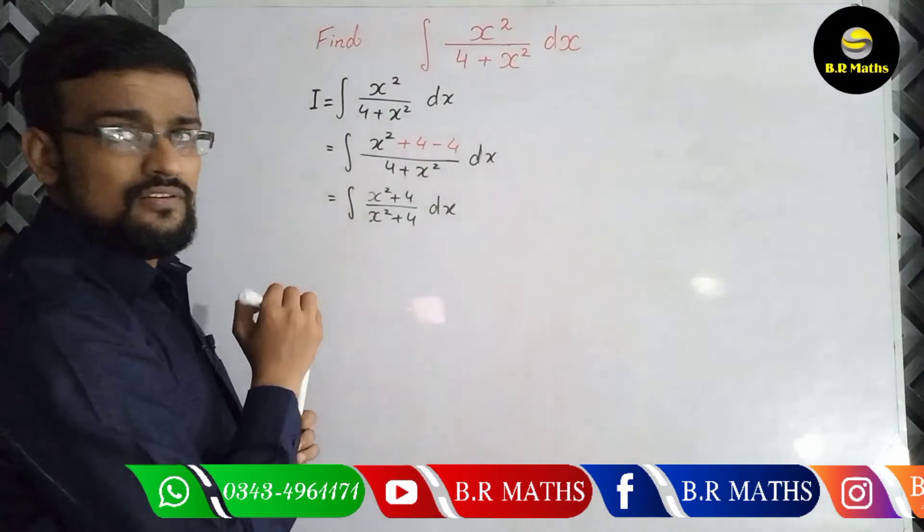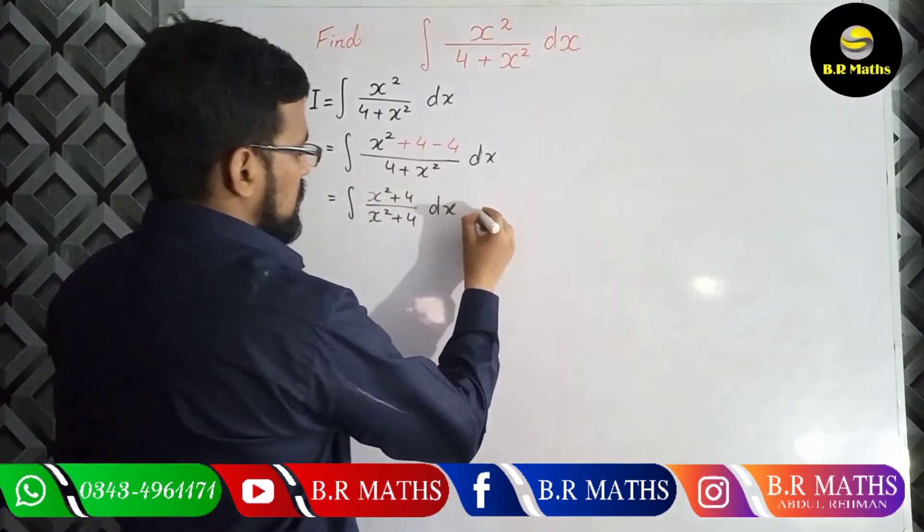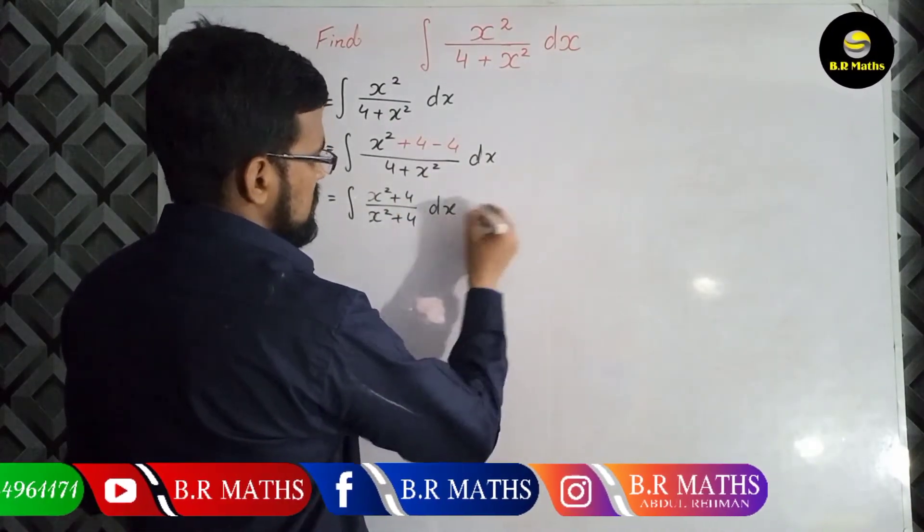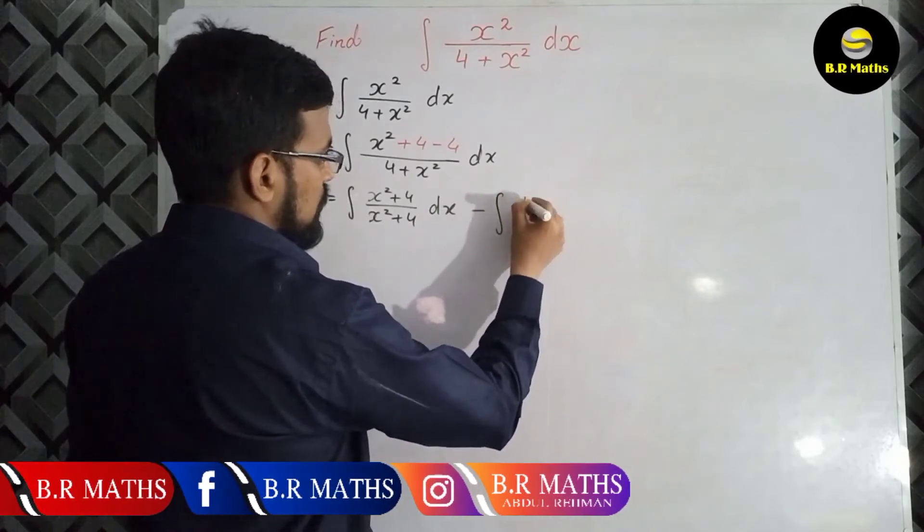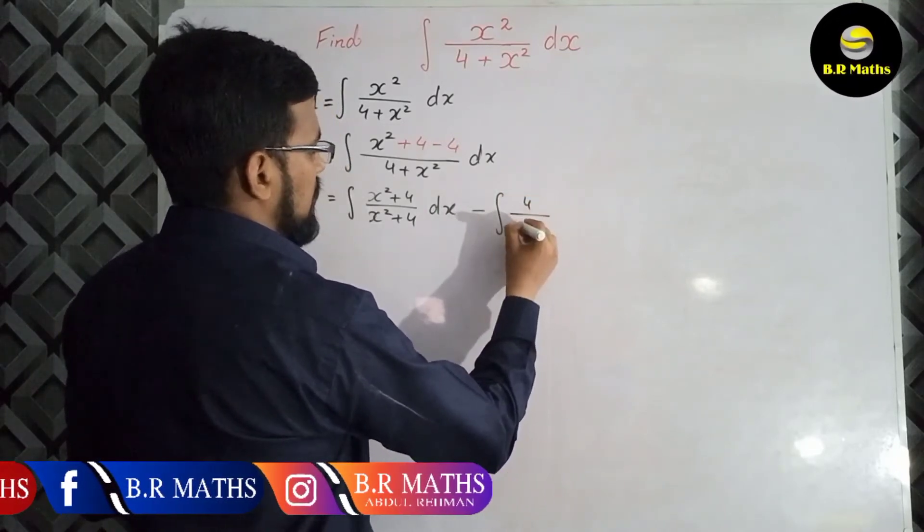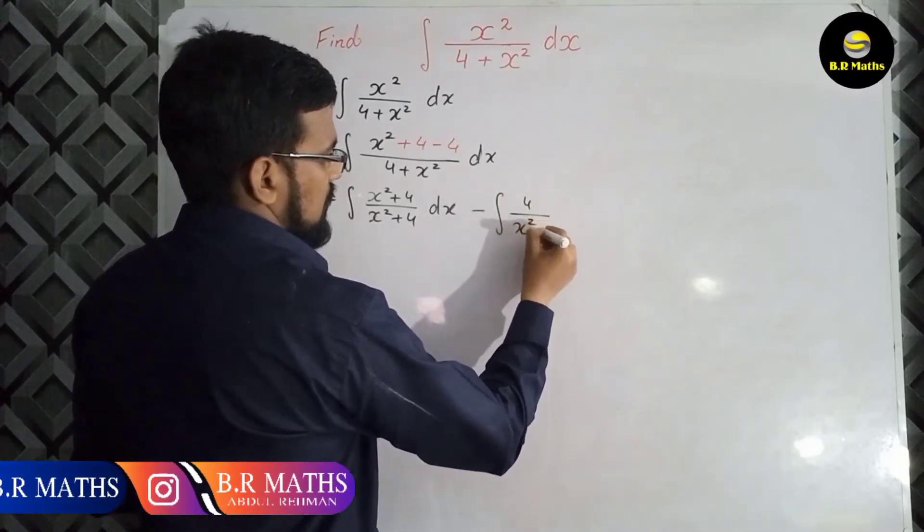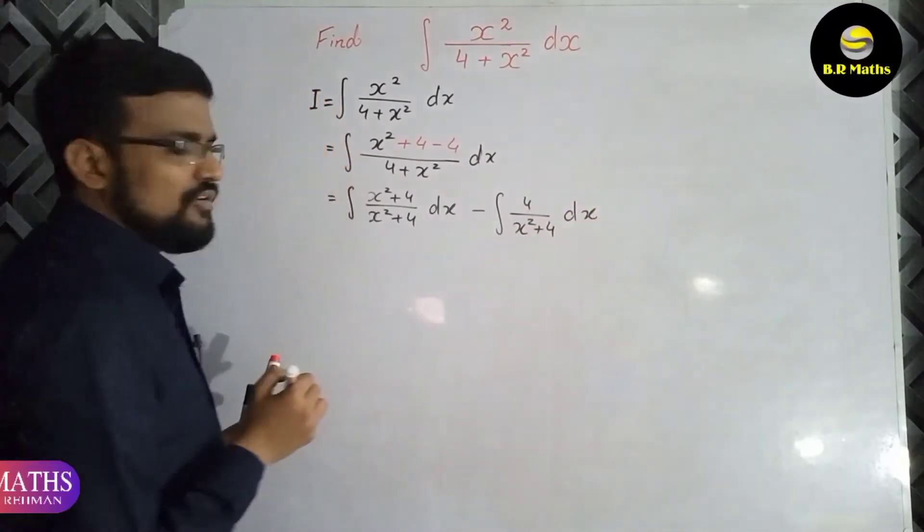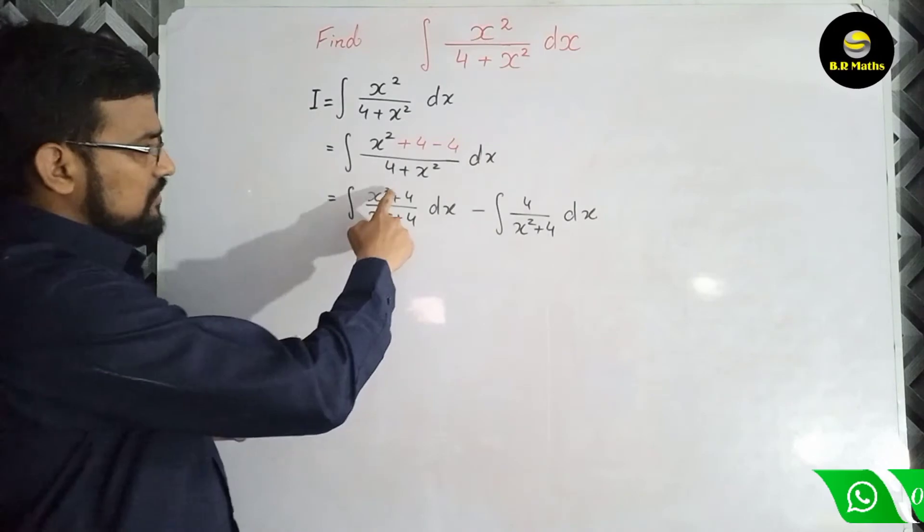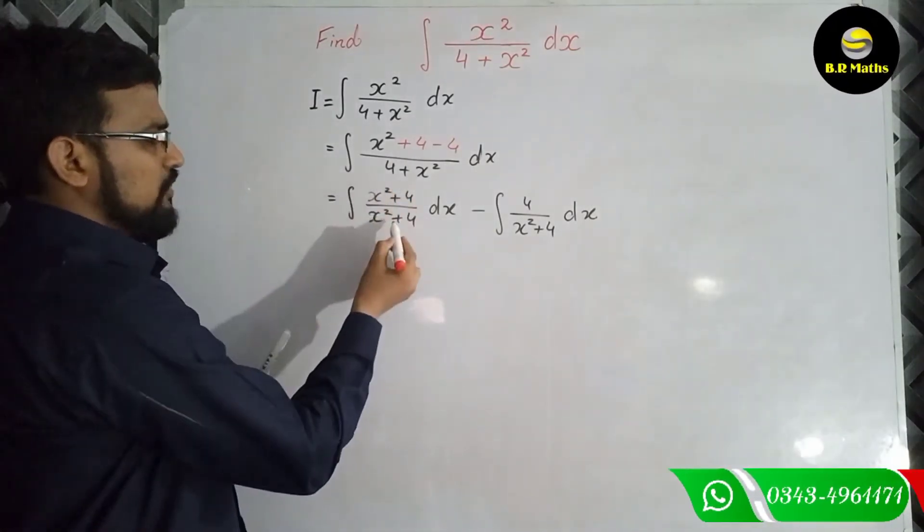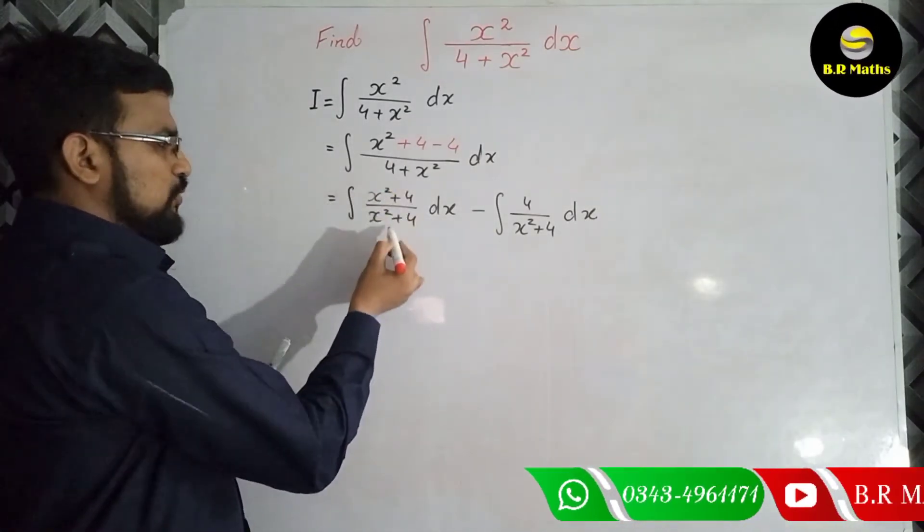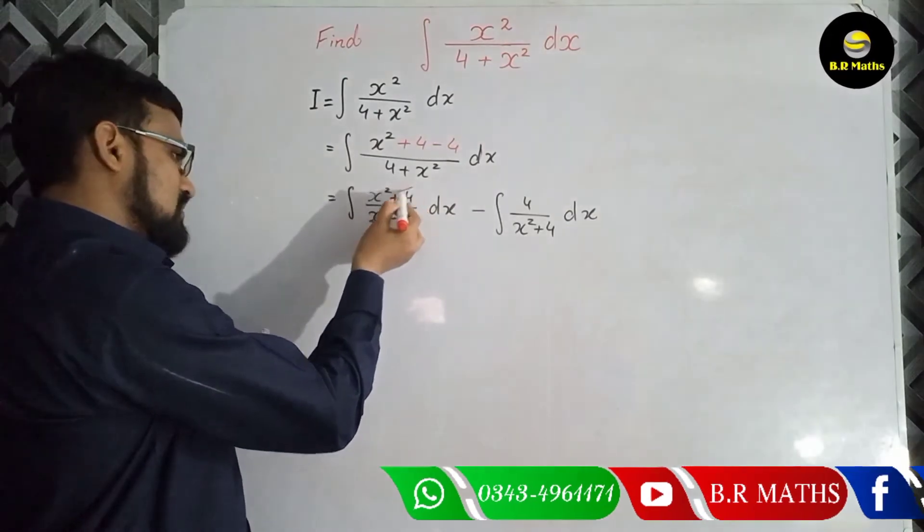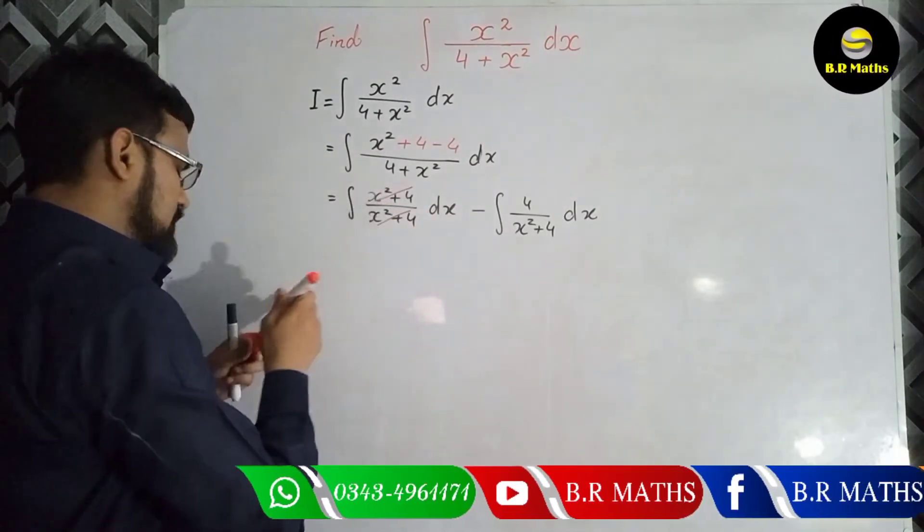This one, and minus 4 divided by x square plus 4 dx. So here x square plus 4 and x square plus 4, both in numerator and denominator, are the same, so cancel with each other and it becomes 1 dx. This is very simple: integration of 1 is x.